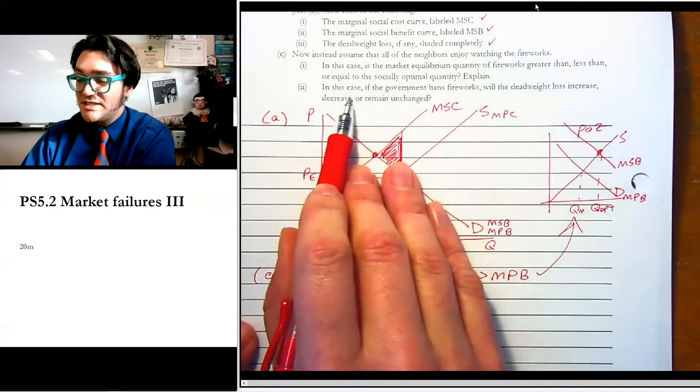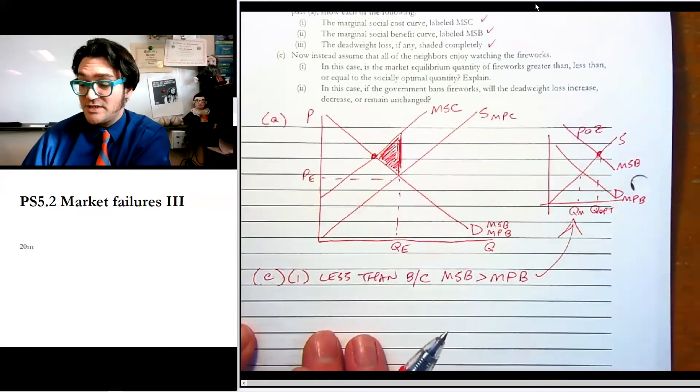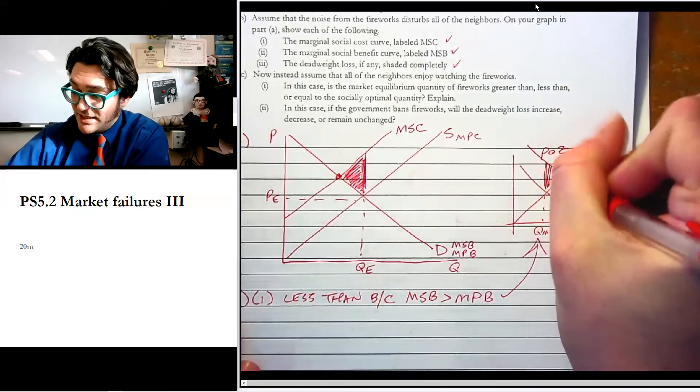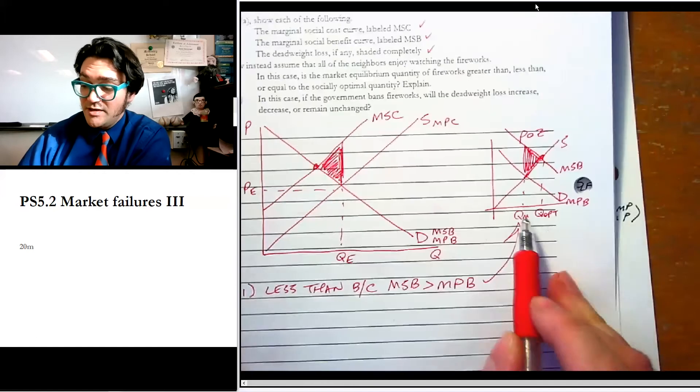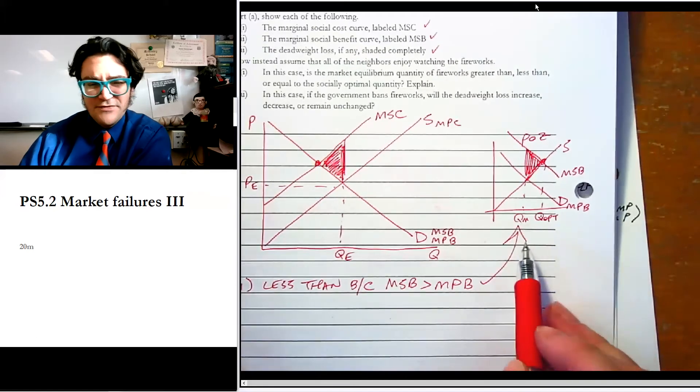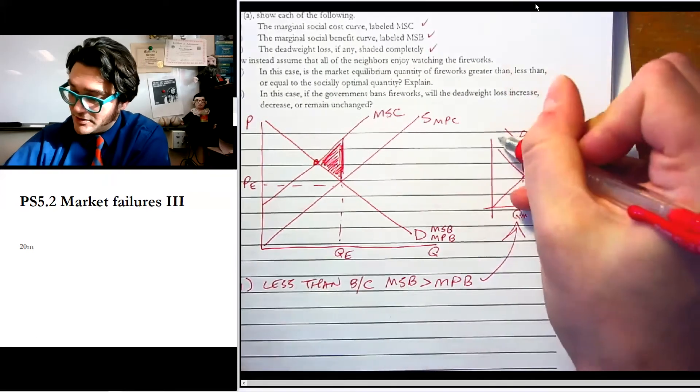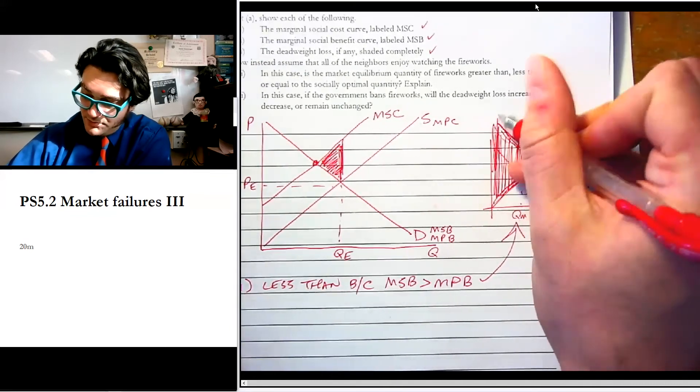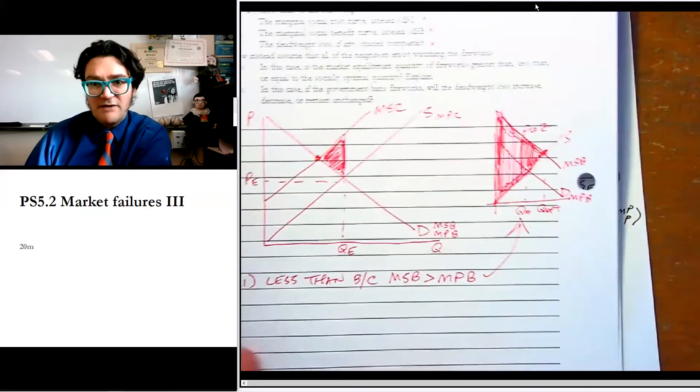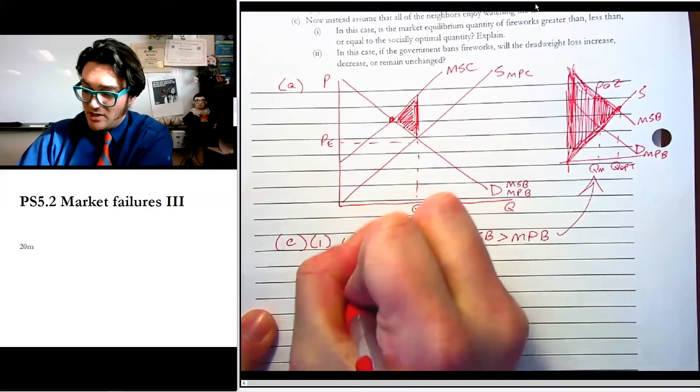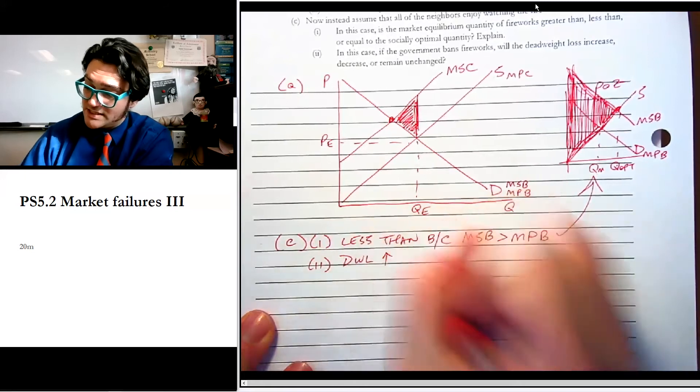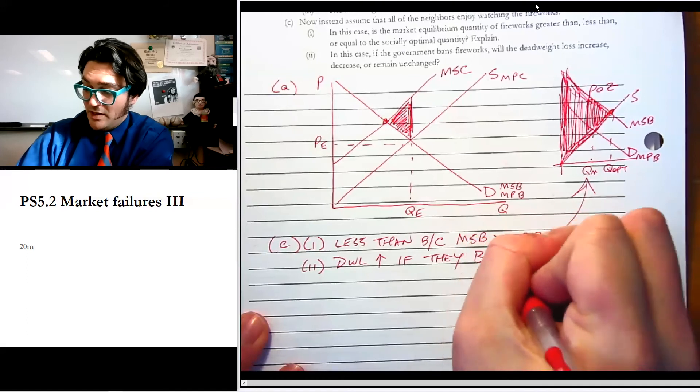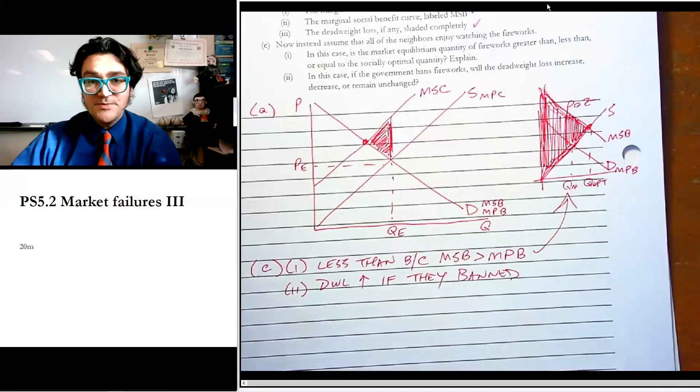And then C2 says, in this case, if the government bans fireworks, will the deadweight loss increase, decrease, or remain unchanged? Well, we're already not producing enough, right? We've got this deadweight loss over here between QM and Qopt. If they banned them, then literally, like all of this is deadweight loss. And then, you know, people are sad. And so obviously, like the deadweight loss would increase if they banned them. Okay, so hopefully that helps you. See you next time.